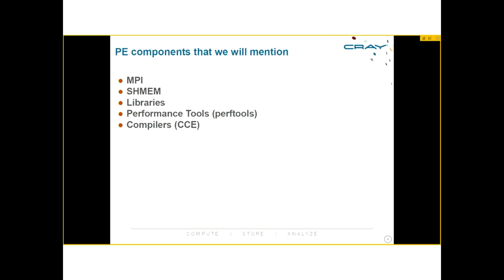We'll now go through various aspects of the programming environment — starting with MPI, then a short section on SHMEM, libraries, important changes to the performance tools module setup, and finally something about compilers. I'll switch over to Michael, who will cover the MPI section.